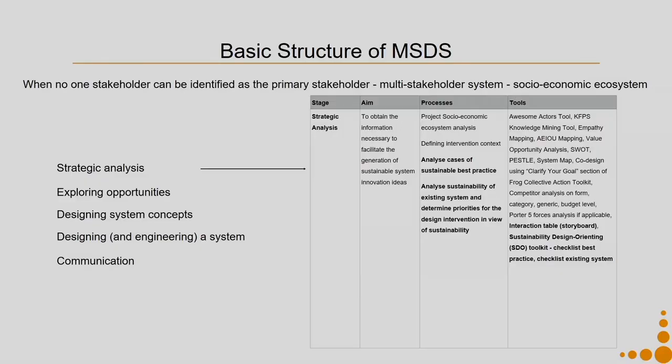Just recall the Sualkuchi silk handloom sector example. In that case, it is very important for designers to understand the ecosystem. The first step is a socio-economic ecosystem analysis: we understand who all the stakeholders are, who the main stakeholders are, which stakeholders help achieve targets, what their major contributions are, what their value systems are, what gains they want, and what pains they are suffering. We also try to understand existing infrastructure, since that is often a big hurdle in these contexts.